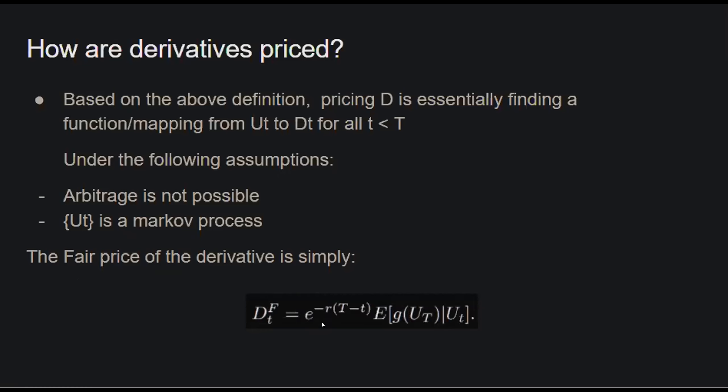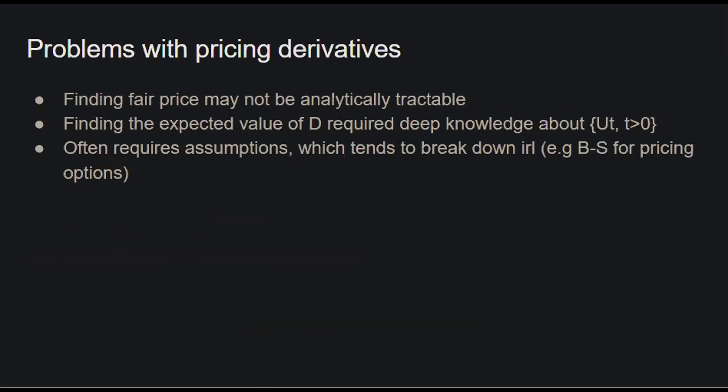The fair price of the derivative is the discounted expected value of the derivative, which is a function of the underlying asset given the underlying asset's current price. There are problems with pricing derivatives: the fair price formula shown is not always analytically tractable, meaning it can't always be solved analytically and would have to be approximated or solved numerically. Also, finding the expected values of D requires deep knowledge about the underlying price process U(T), and such detailed knowledge may not be possible in real-world scenarios.